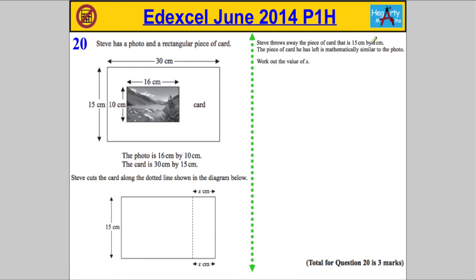Steve will throw away the piece that is 15 by X, so in other words this part he's gonna chuck into the bin, hopefully the recycling. It tells us that the card that he has left is mathematically similar to the photo.